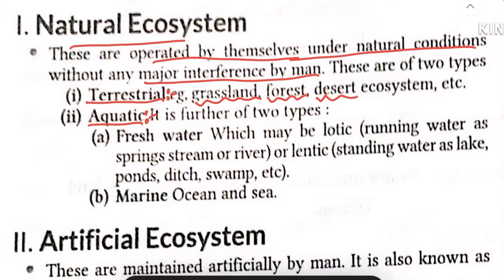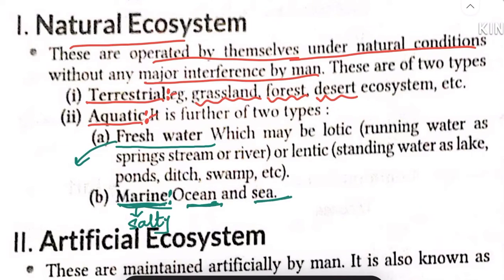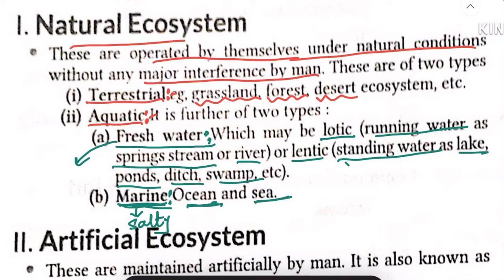Aquatic ecosystems are divided into two parts: freshwater ecosystem and marine ecosystem. Freshwater means rivers and ponds. Marine means saltwater, like oceans and seas. Freshwater ecosystems can further be lotic — running water like springs, streams, and rivers — or lentic — still water like lakes, ponds, ditches, and swamps.